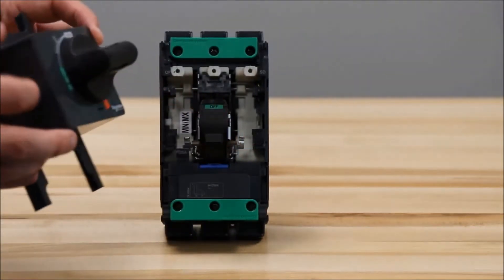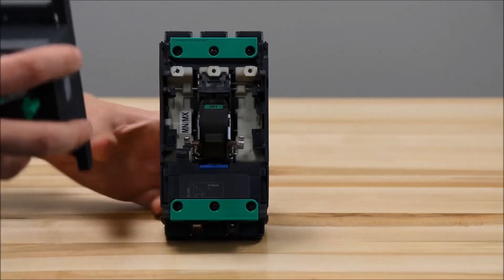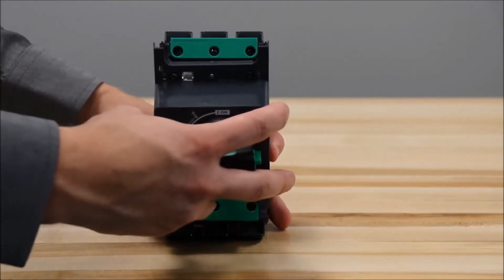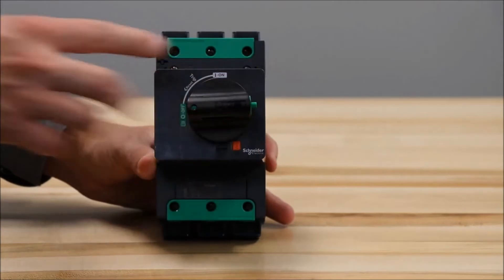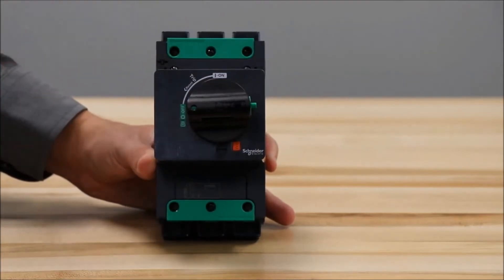Once you have the handle installed you will put the cover back onto the breaker by putting it in place and re-tightening these two cover screws.